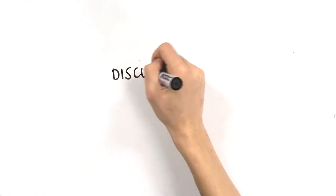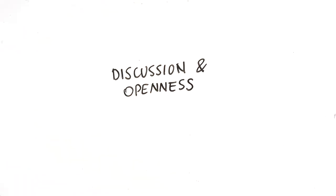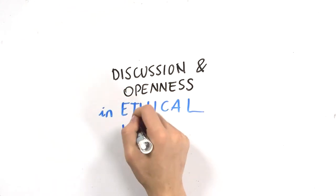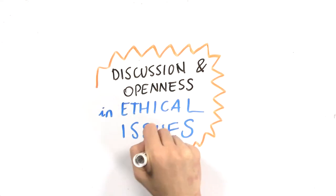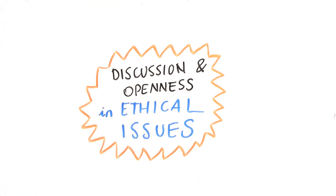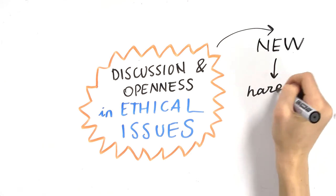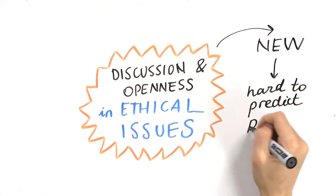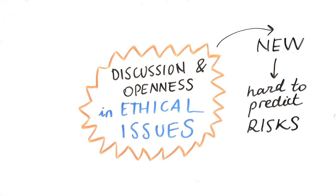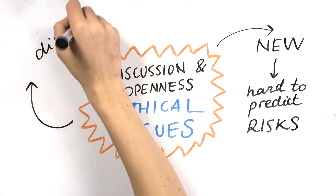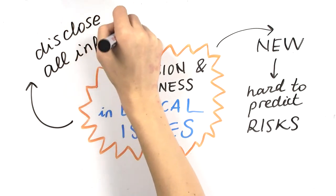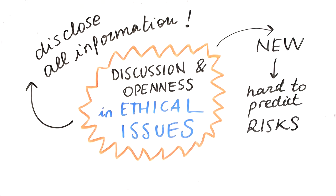These examples serve to paint a picture on the importance of discussion and openness on ethical issues arising from synthetic biology projects. Since the field of synthetic biology is relatively new with far-reaching applications, it is difficult to persuade yourself and society about the potential risks and concerns around its products industrially and commercially. Therefore, it is important to be able to disclose all information in an organic and interactive manner with policy makers and the general populace.